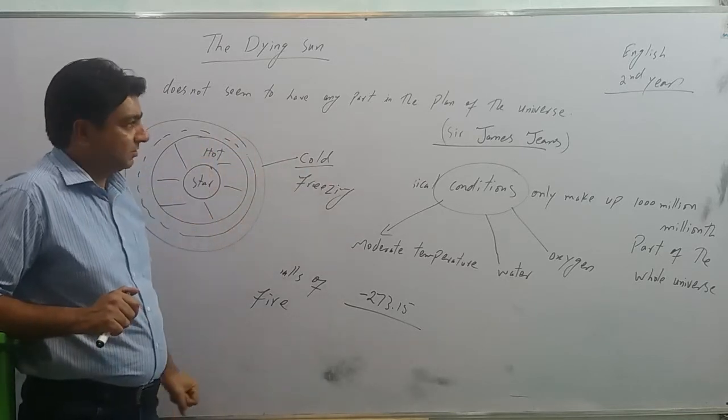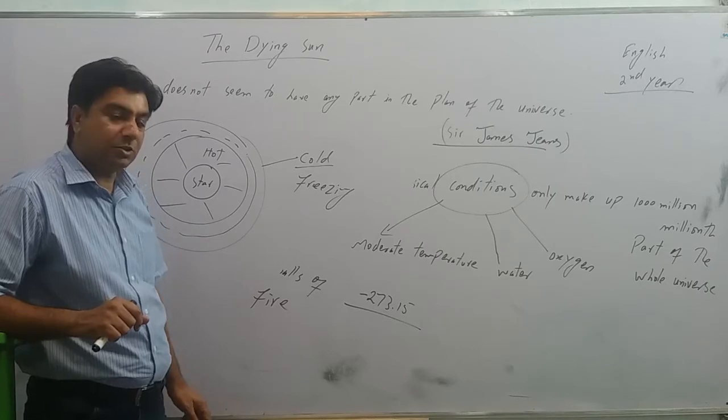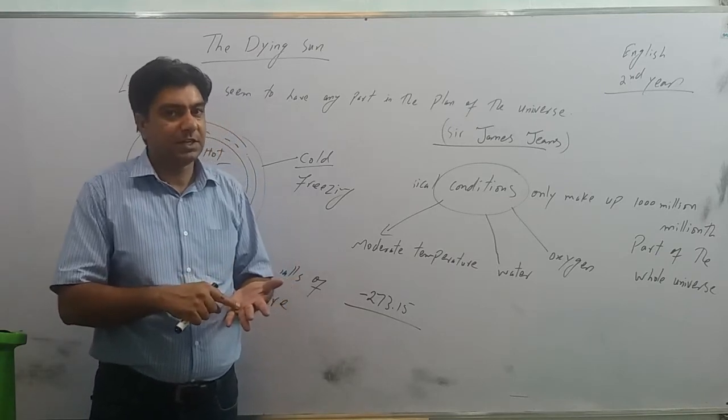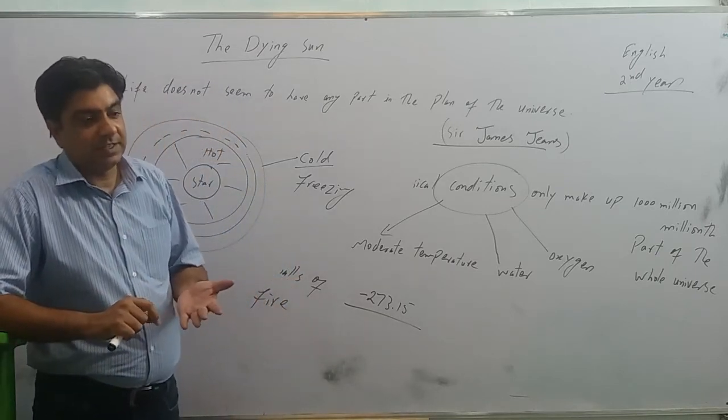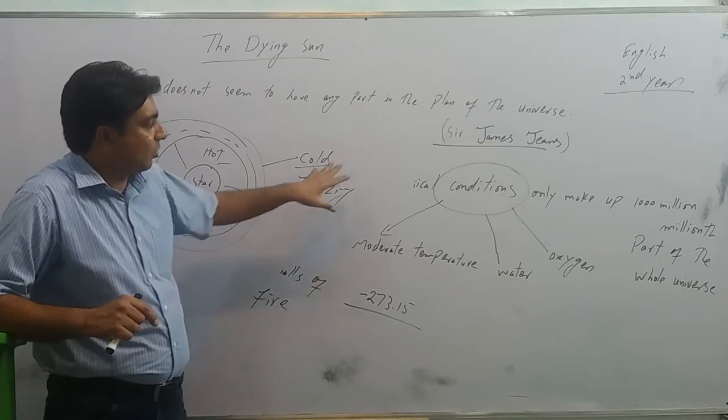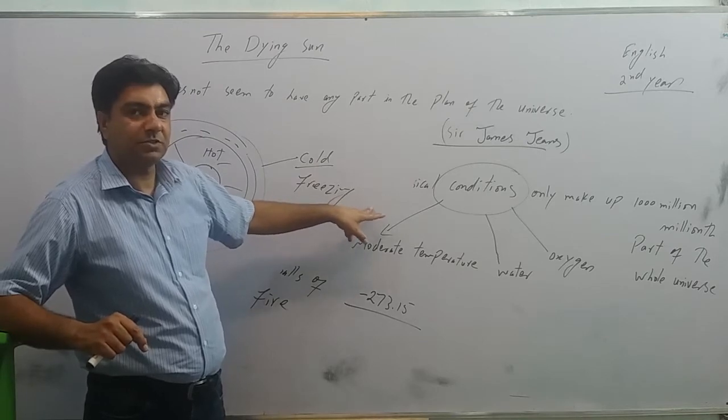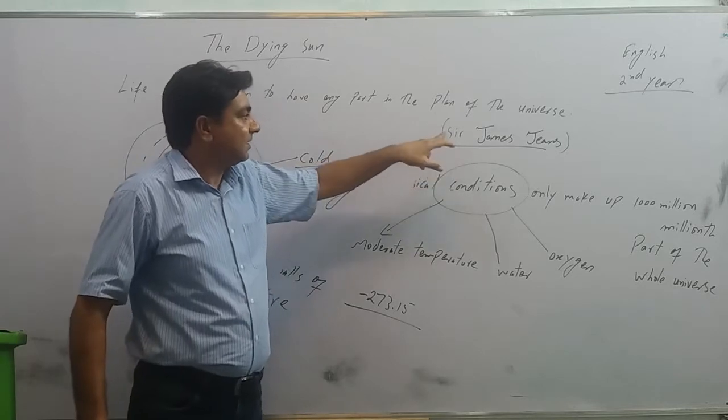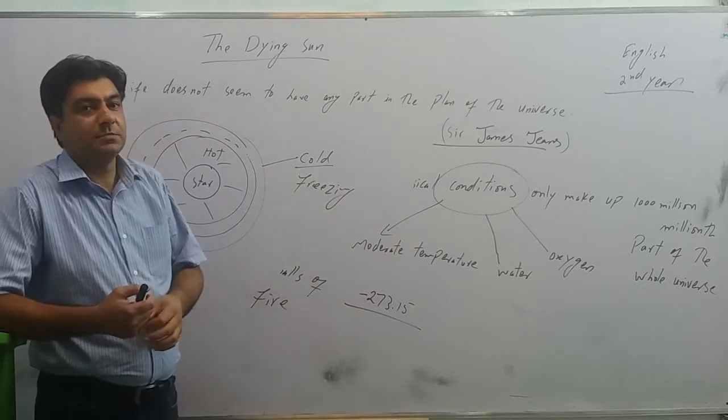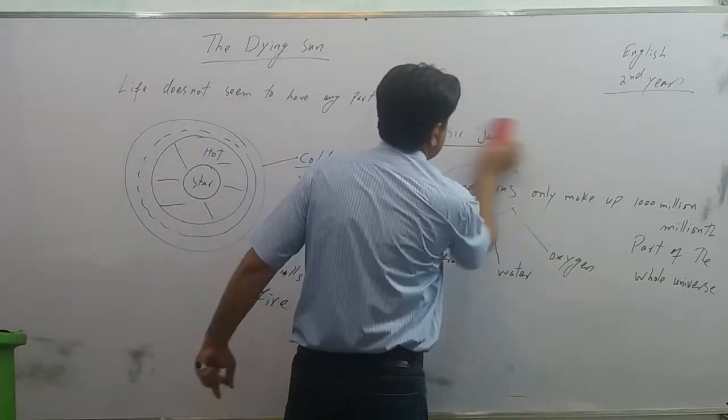Our question then comes, How is it that there's life on the planet Earth? Not only there is life, there has been life on the planet earth. We have been living, our ancestors have been living, and there is such a variety of life on the planet earth. Why is it then? How was this planet created and how did life come to exist on this planet? Sir James Jeans says that it was not probably the plan of the creator, it just happened by chance.